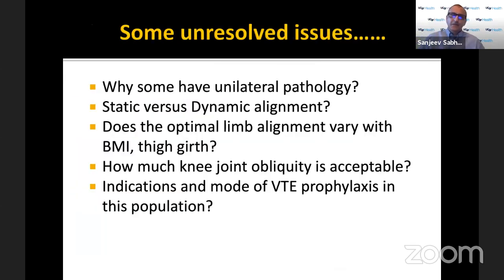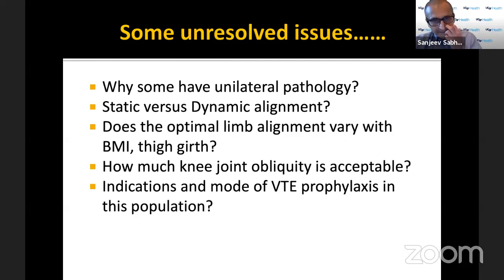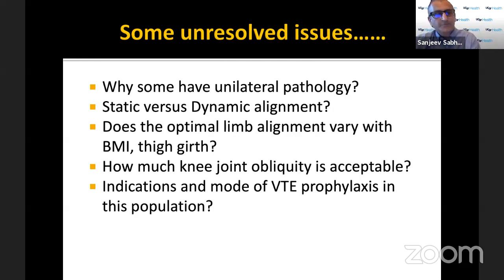There are many unresolved issues with Blount's. We still don't know the etiology, whether early and late onset are really the same problem, and why some patients get unilateral versus bilateral disease. The difference between static and dynamic alignment — which do you go for? Many children with severe disease have joint line laxity and varus thrust when they walk. What is the optimal limb alignment in obese patients? What they feel good with is a little bit of undercorrection, but from a joint biomechanics perspective, what is optimal needs further study. How much joint line obliquity is acceptable? The conjecture is five degrees of overcorrection is acceptable. And what about DVT/VTE prophylaxis in obese adolescents after osteotomy with limited mobility?